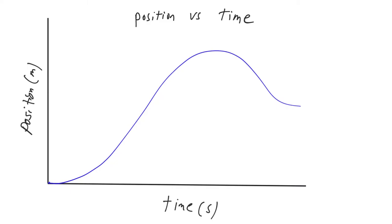What's up everybody, hope you are doing well today. In the last video we took our first look at position-time graphs, looked at really simple graphs with simple curves, and analyzed them. The main conclusion was about the slope — the slope basically tells us the velocity.